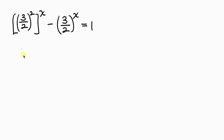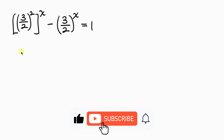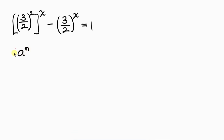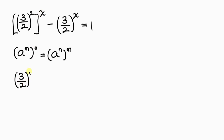Our next step is to apply the property of indices that says when I have a raised to the m, and this is further raised to the n, this equals a raised to m times n — we can switch positions of powers. So the first term becomes 3 over 2 raised to the x, further raised to the 2, minus 3 over 2 raised to the x, equal to 1.